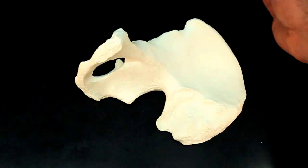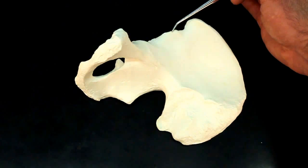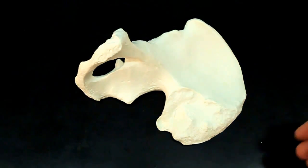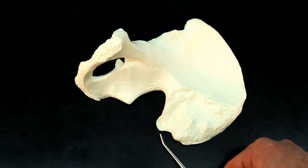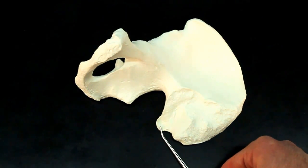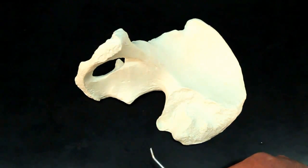Then we have the anterior inferior iliac spine. And then you have the posterior superior iliac spine. Posterior, inferior, iliac spine. So the names are telling you exactly where to look.